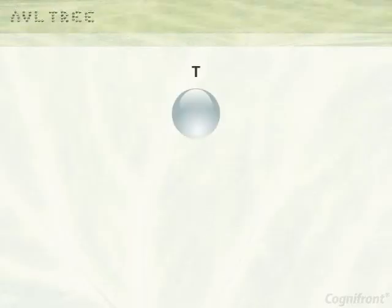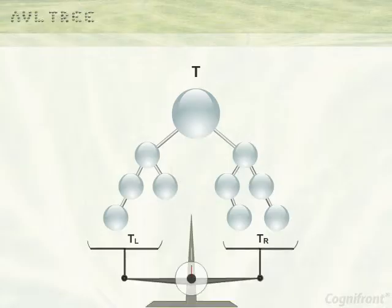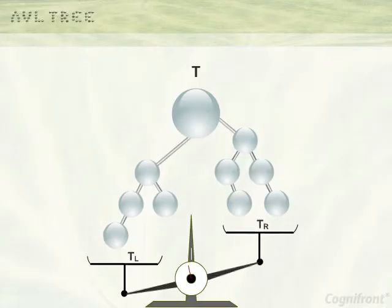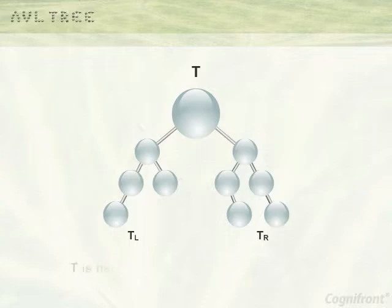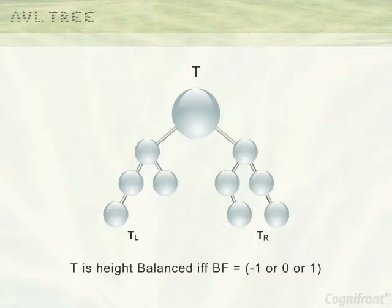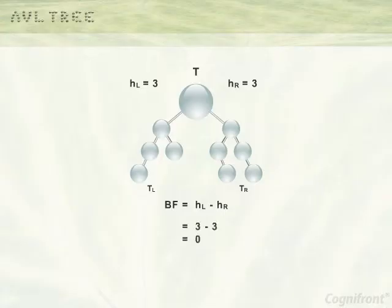Suppose T is a binary tree with TL and TR as its left and right subtrees. We can say that tree T is height balanced if and only if its subtrees TL and TR are height balanced. An AVL tree is called a height balanced tree when every node in that tree has a balance factor BF which should be either minus 1, 0, or 1. The balance factor BF of any node in a binary tree is HL minus HR, where HL and HR are the heights of the left and right subtrees of that node.